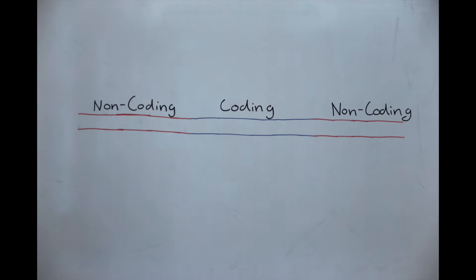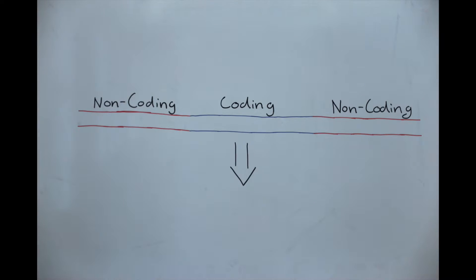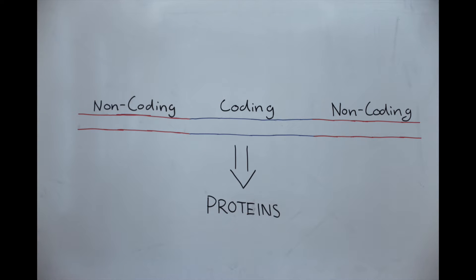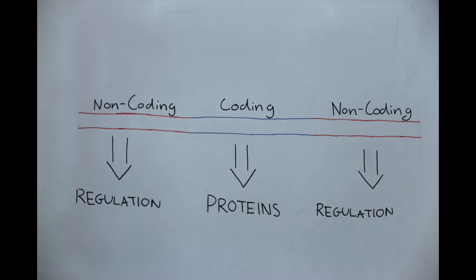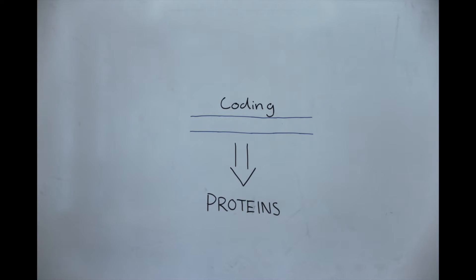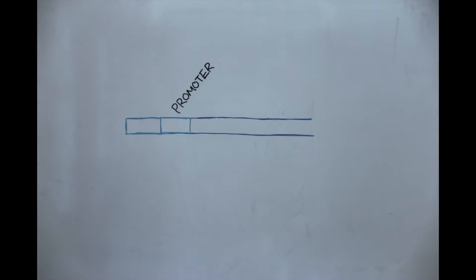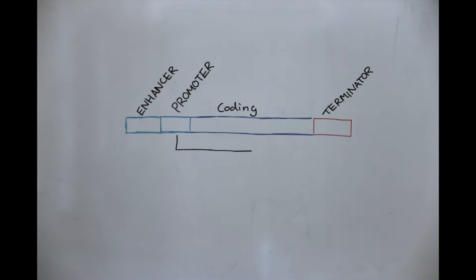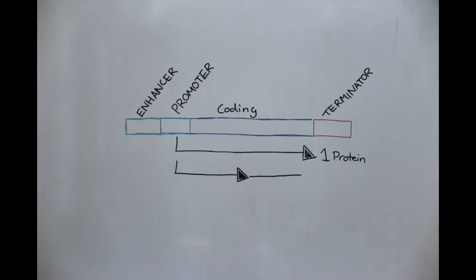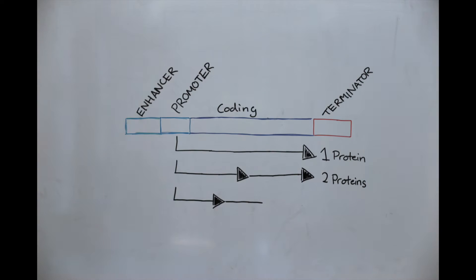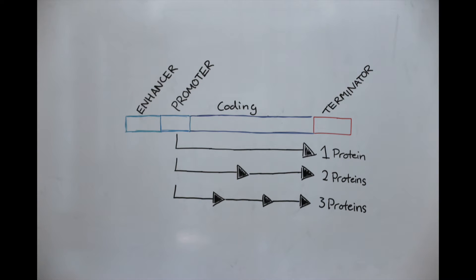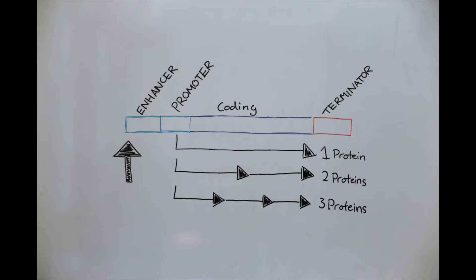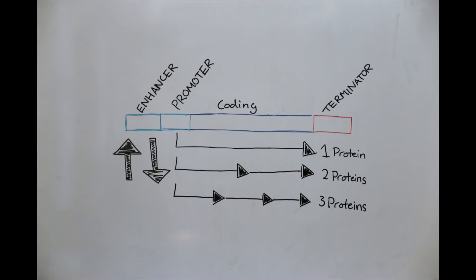DNA contains both coding regions, which contain information for creating proteins, and non-coding regions, which regulate the process of turning DNA into RNA and into proteins. Surrounding the coding regions are regulatory sequences of DNA called the enhancer, promoter, and terminator sequences. These regulatory sequences manage how often the coding sequences become activated and how much of the resultant protein is expressed. Because of these regulatory regions, DNA and protein expression can be turned up to create more proteins or turned down to create less.